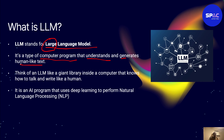In the last video we were able to interact with ChatGPT and it gave us text and interacted with us like humans. The brain behind that is the Large Language Models, because they are able to understand the questions asked and generate new text based on what they've learned — to give a response. Think of an LLM as a giant library inside a computer that knows how to talk and write like humans.